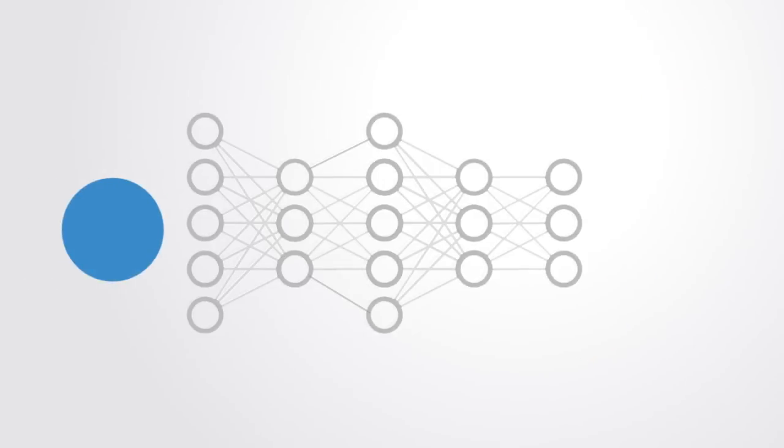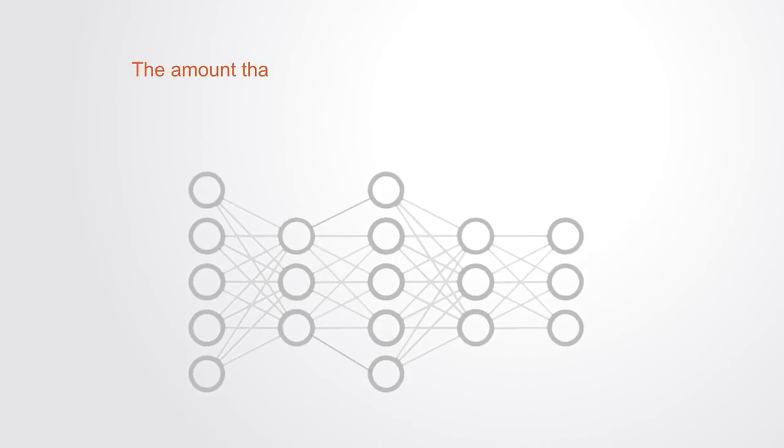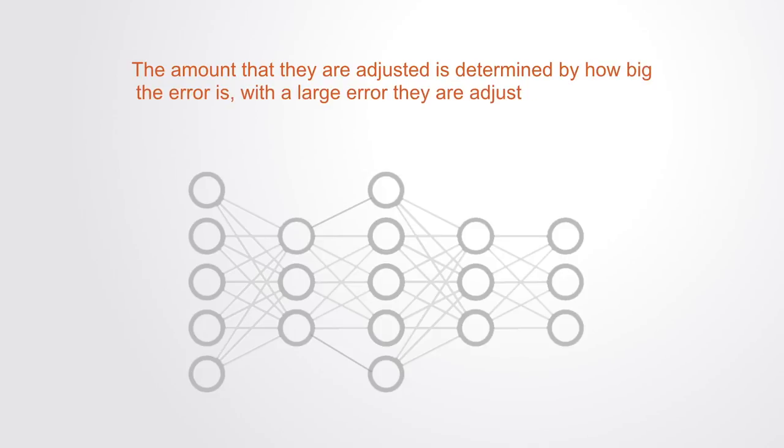So if we put in a graphic of a circle and ask the system to identify it and it outputs an estimation that it was 0.8 likely to be a circle, we know that there is an error of 0.2. We can then adjust the edges and nodes up and down by a very little amount to see how the error changes. The amount that they're adjusted is determined by how big the error is: with a large error, they're adjusted a lot; with a small error, just a small bit; with no error, they're not adjusted at all.